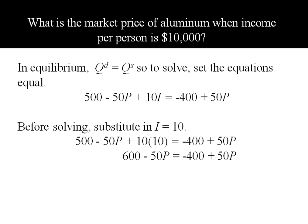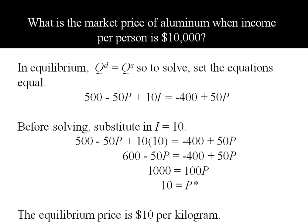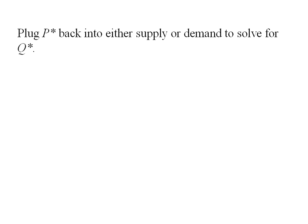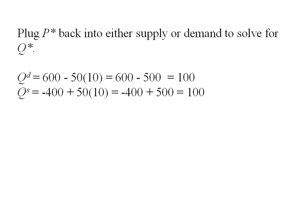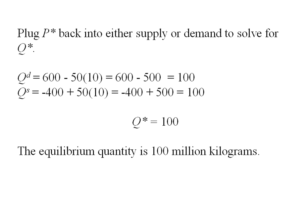Plugging in and working through the math, I get 10 as my equilibrium price—$10 per kilogram. I can plug that back into either supply or demand to get my equilibrium quantity. I like to plug it into both just to double check my work, and I find equilibrium quantity is 100 million kilograms.